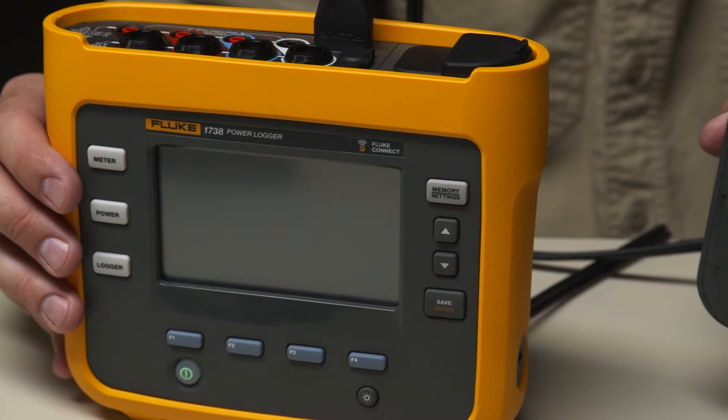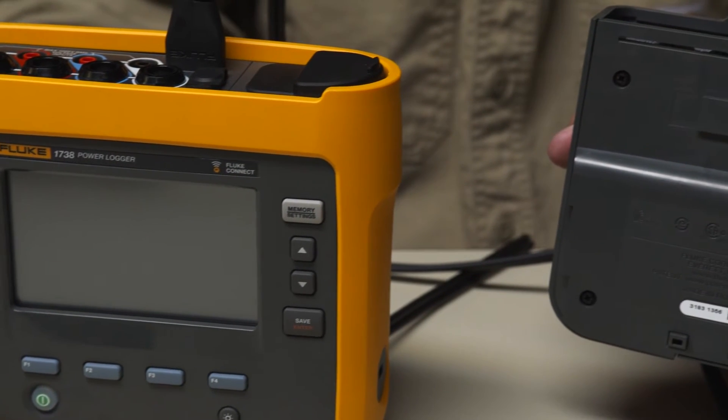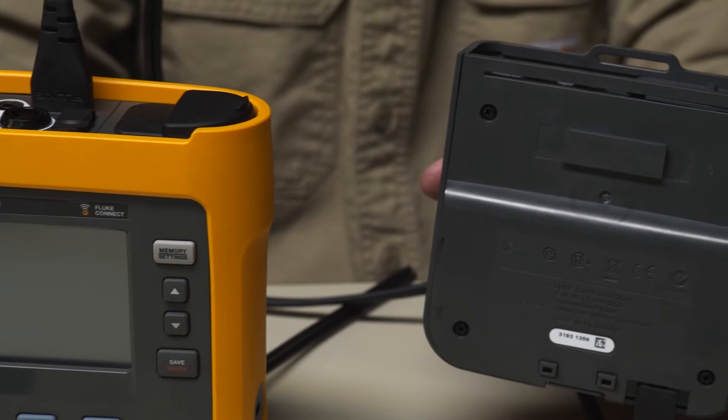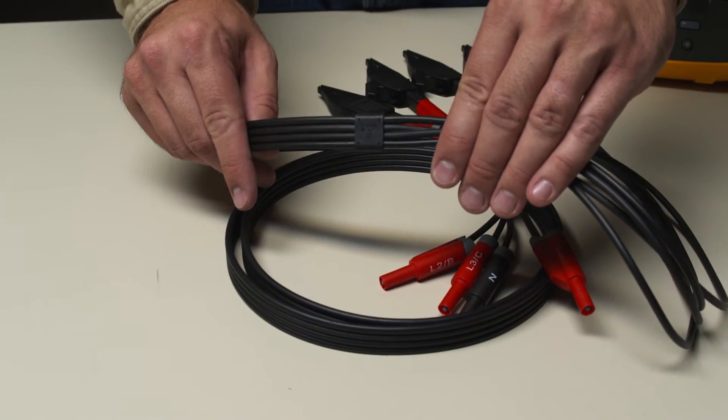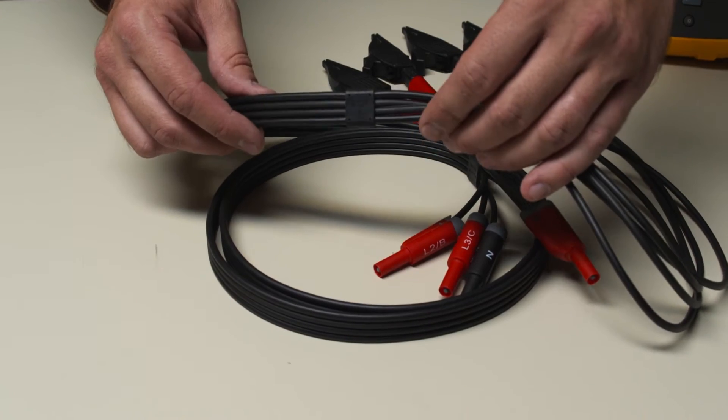The power supply is also detachable, so you can easily fit the logger into tight spaces. Flat voltage measurement leads help ensure connections are made correctly and help eliminate tangles in the panel.